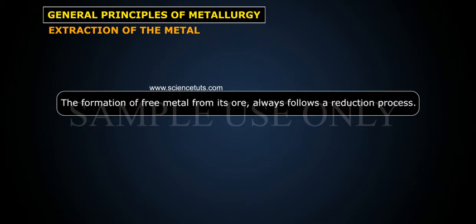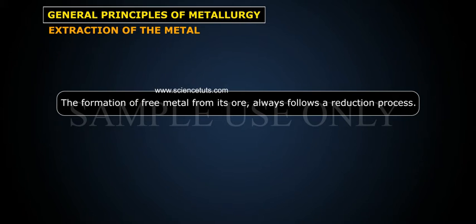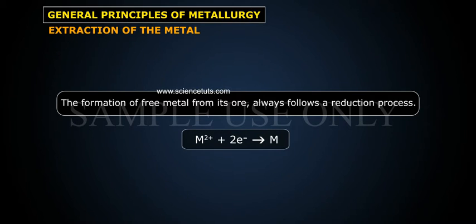The formation of free metal from its ores always follows a reduction process: M²⁺ + 2e⁻ → M.